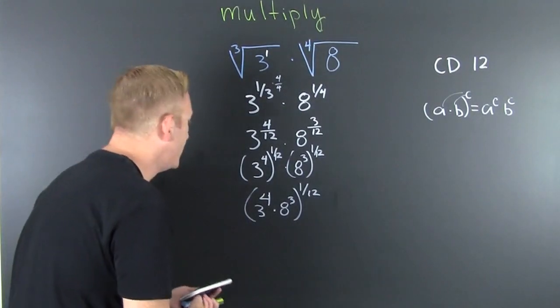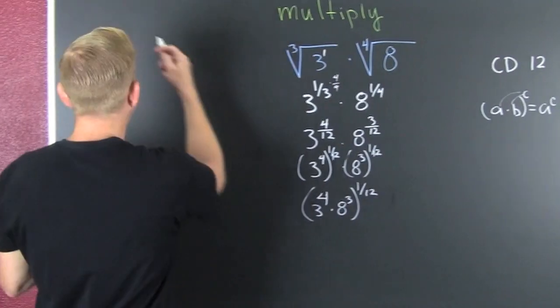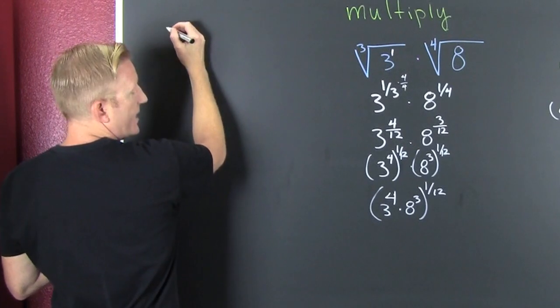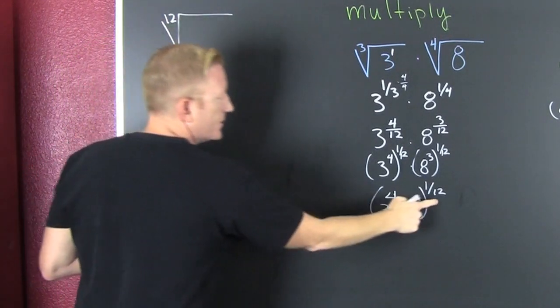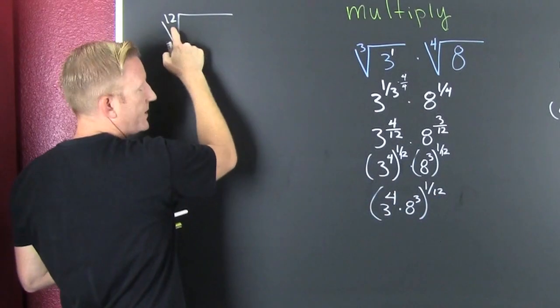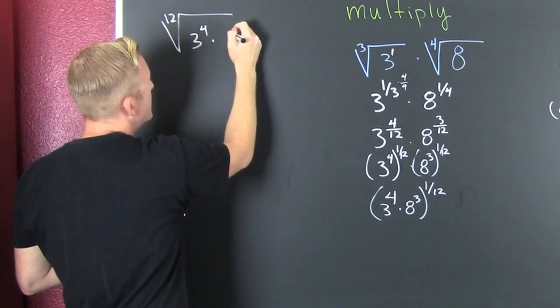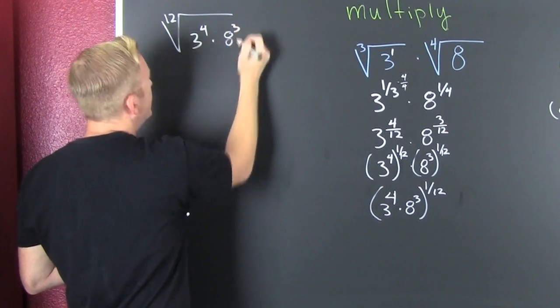Let me take it up here. So I have the twelfth root, because my denominator is the index, of 3 to the fourth times 8 to the third.